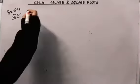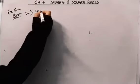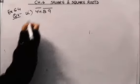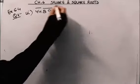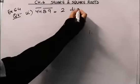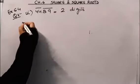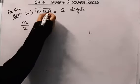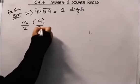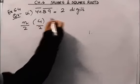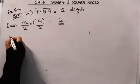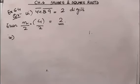The third example is 4489. Using the bar method, we put one bar here and another bar there — 2 bars total — so the square root will have two digits. Using the formula method, 4489 has 4 digits which is even, so n/2 = 4/2 = 2 digits. The answer is 2.